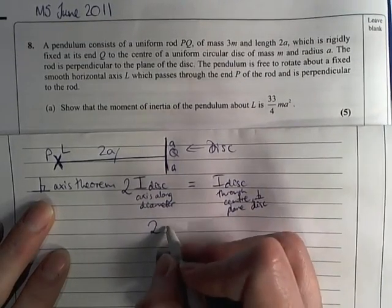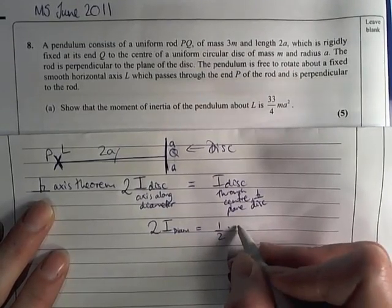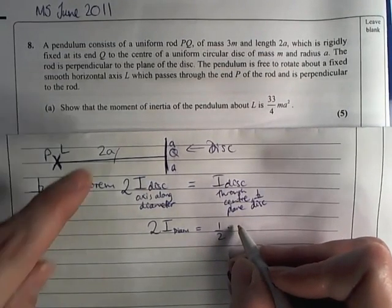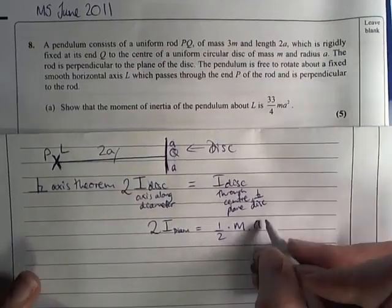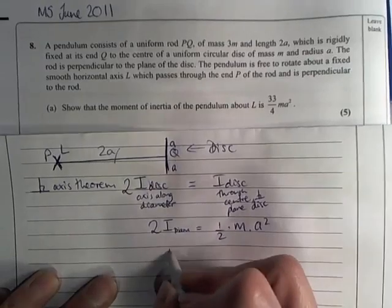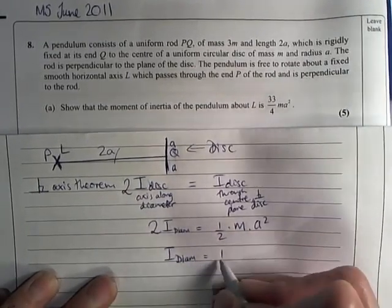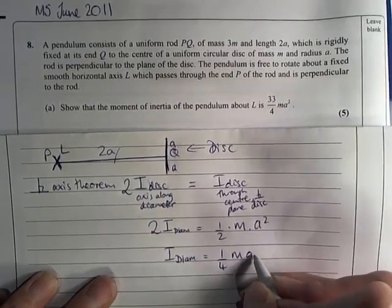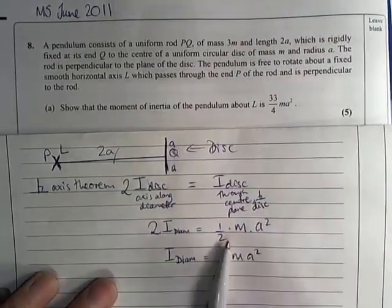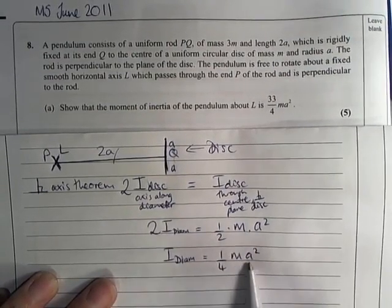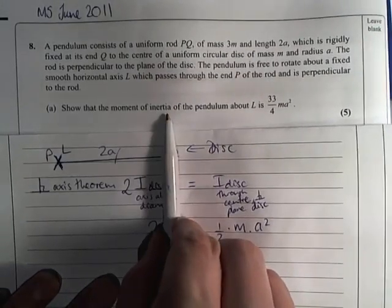So here we have 2 times I diameter equals half times the mass of the disk which is m times the radius which is a squared. So I end up with I along the diameter is a quarter ma squared. So now at least the axis about which this is the moment of inertia is here, so now I need to move that axis.